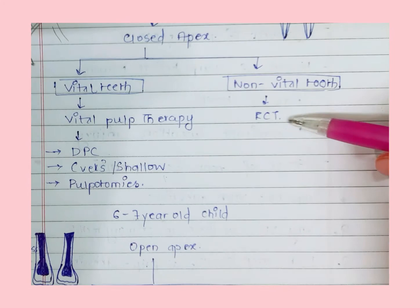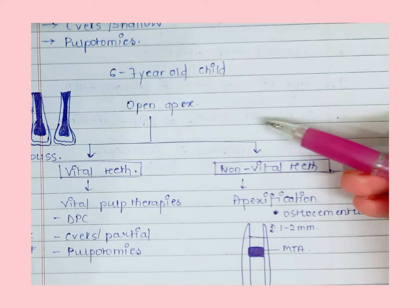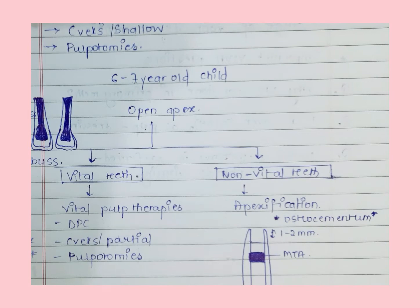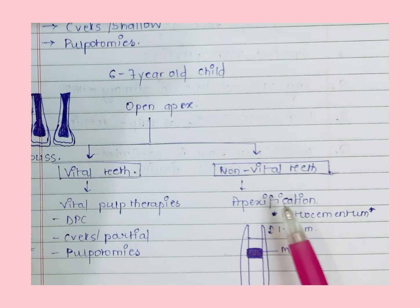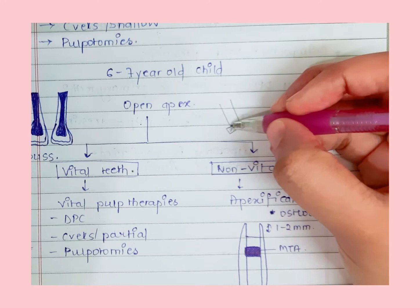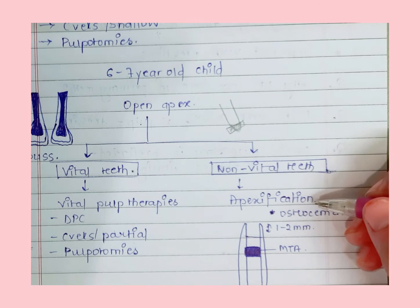Now consider another case where the child is six to seven years old. Here the apex is open — it could be blunderbuss or non-blunderbuss. Again we have two possibilities: if vital, we provide vital pulp therapies — DPC or Cvek's pulpotomy — performed one week post-fracture, or other pulpotomies. If it is an open apex case with a non-vital tooth, we perform apexification, because the apex is open and we must artificially induce closure of the apex.